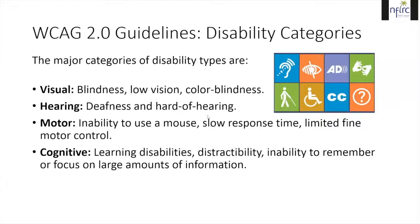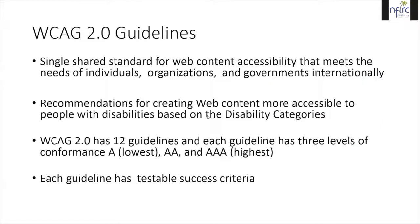WCAG 2.0 guidelines were developed by the World Wide Web Consortium W3C organization. It provides a single shared standard for web content accessibility that meets the needs of individuals, organizations, and governments internationally. The guidelines provide recommendations for creating web content with enhanced accessibility for individuals with blindness and low vision, deafness and hearing loss, limited movement, learning disabilities, cognitive limitations, speech disabilities, photosensitivity, and any combination of these.